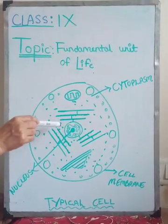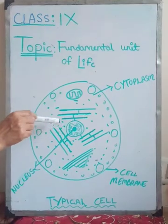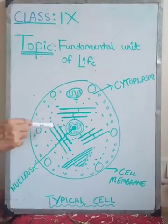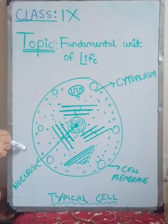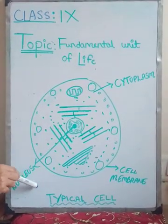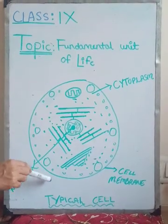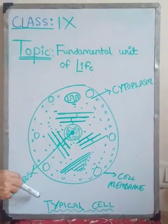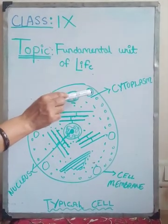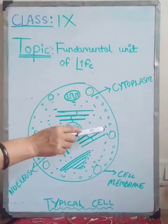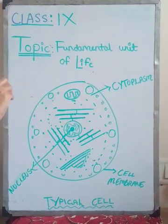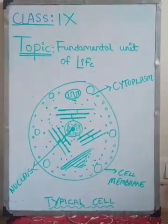So what will be the resultant? The net movement of water will take place from both sides, but more water will leave the cell rather than entering into the cell. Because of that, the size of the cell is going to shrink.